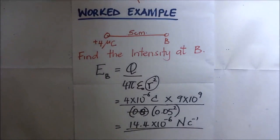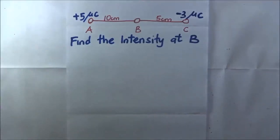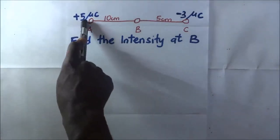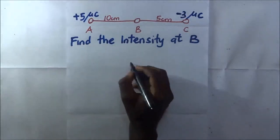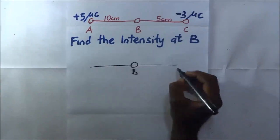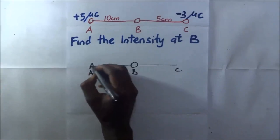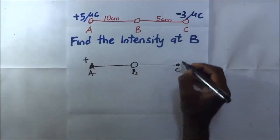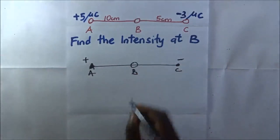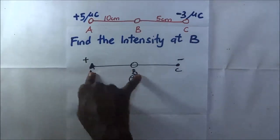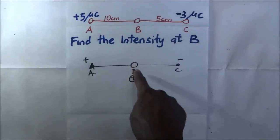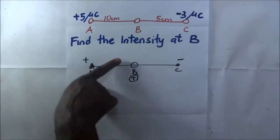Let's find the intensity at point B in this next question. We have point A with a positive charge of five microcoulombs and point C with negative three microcoulombs. Redrawing the diagram, we have B in the middle, A on one side, and C on the other. A is positively charged, C is negatively charged. We shall assume that B is positively charged.